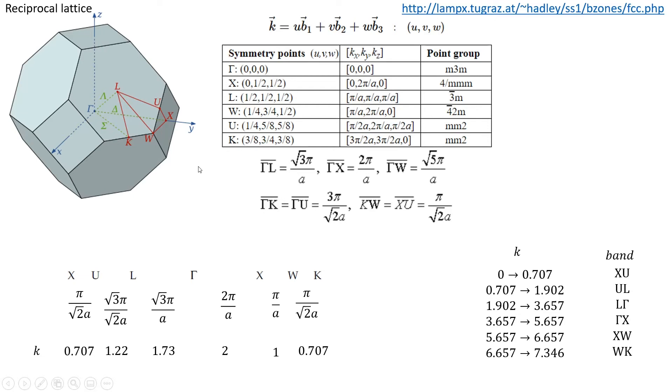What I did is to calculate the length of the XU band from this relation here, so I get the norm of the vector XU, and similarly for UL and for L gamma and so on. Then I just take a common factor and I define the length here, the length here, the length here.